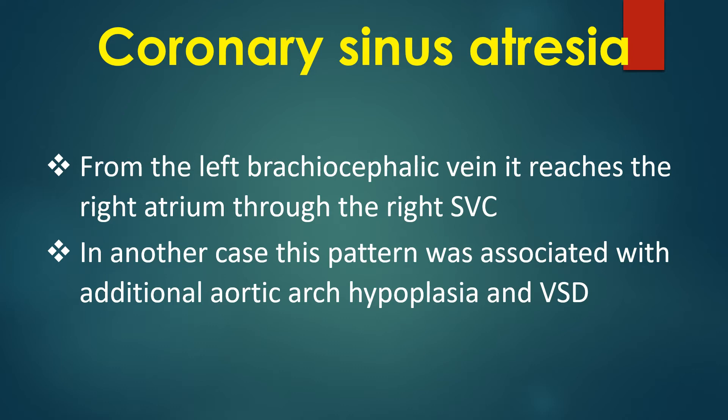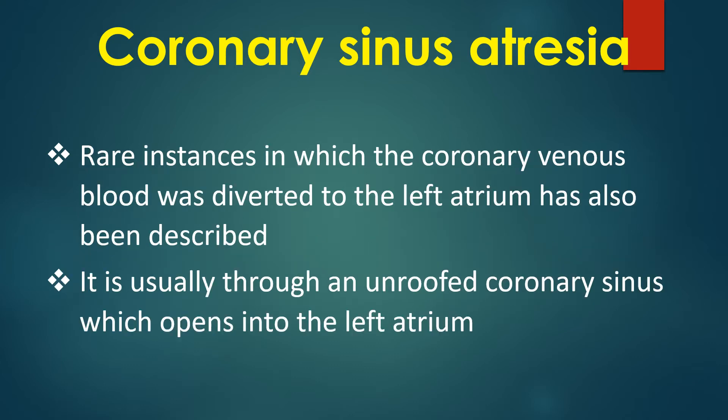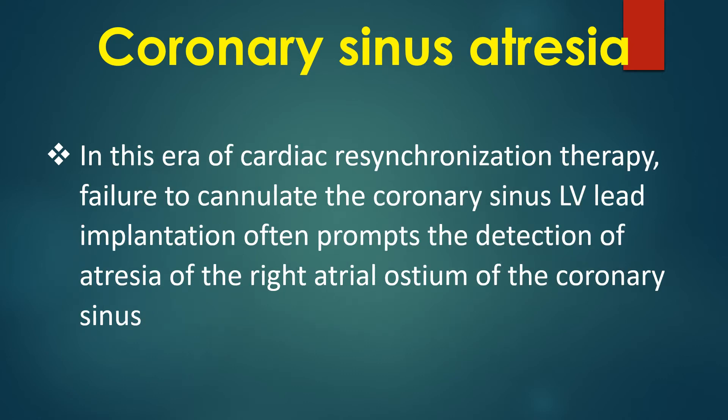In another case, this pattern was associated with additional aortic arch hypoplasia and ventricular septal defect. Rare instances in which the coronary venous blood flow was diverted into the left atrium have also been described. It is usually through an unroofed coronary sinus which opens into the left atrium.